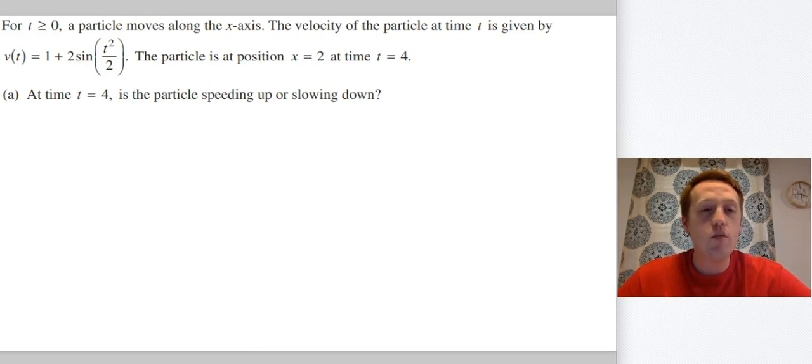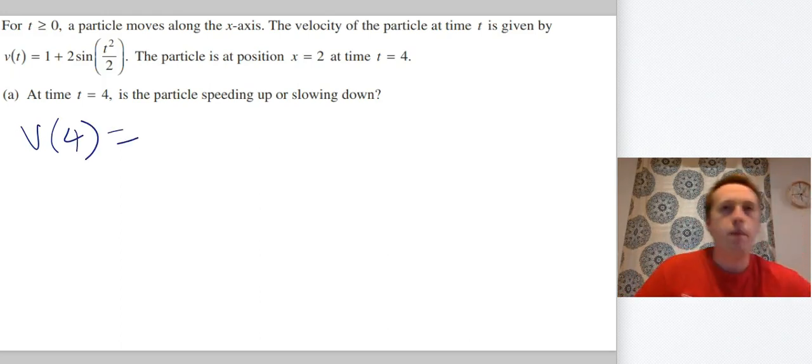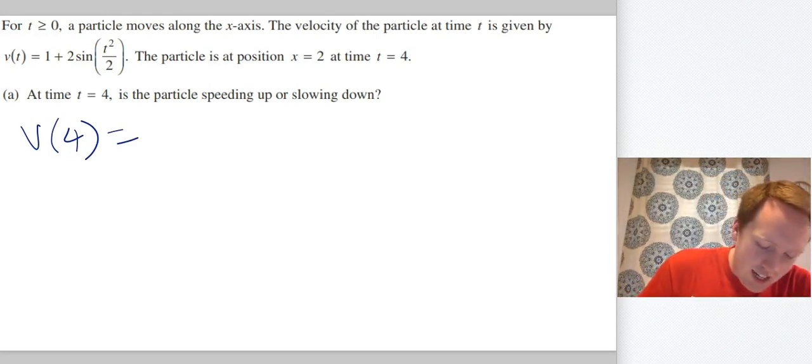It wants to know at time t = 4, is the particle speeding up or slowing down? So speeding up and slowing down means we need to know the velocity and the acceleration at t = 4. So let's find v(4). We get v(4) just by plugging 4 into the expression, and when you do that you end up getting 2.97, 2.978716.